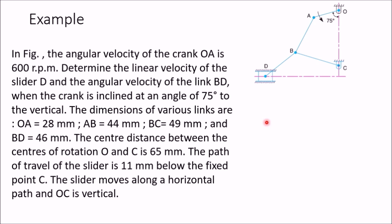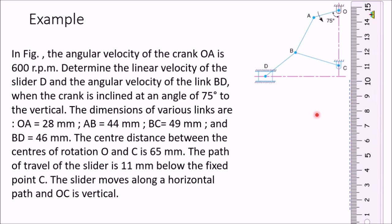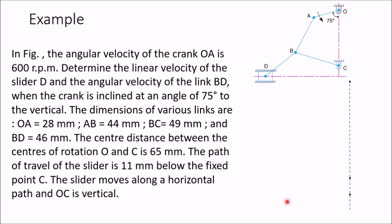First, we have to draw this configuration diagram on our sheet. I have drawn one vertical line on which we will mark OC. Take a scale. O to C is given as 65 mm, and from C to the next point this distance is given as 11 mm. Mark three points: this point is O, then 6.5 cm, then 1.1 cm for the next point. After marking these three points, remove the scale. From the bottom, draw this horizontal line.